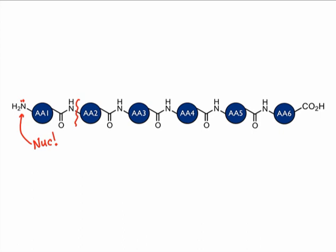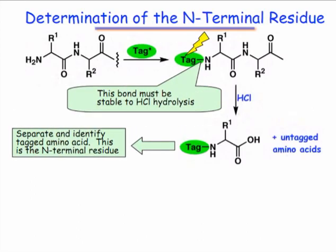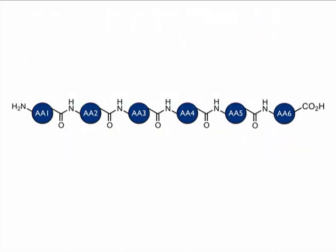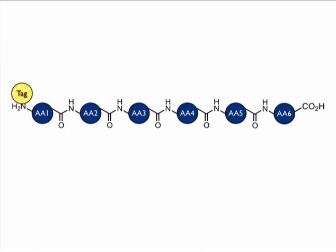Eventually, we'll see that peptide sequencing amounts to iterative or repetitive identification of the N-terminal residue. Here we see a figure that describes the general process of identifying the N-terminus of a polypeptide. First, we react the amino group with a tagging molecule. The tag has a unique spectroscopic signal that allows us to distinguish the tagged amino acid from the others after peptide bond cleavage.